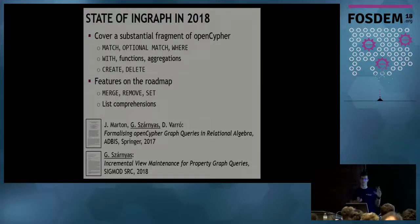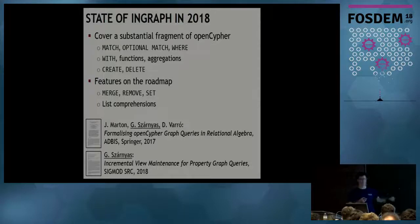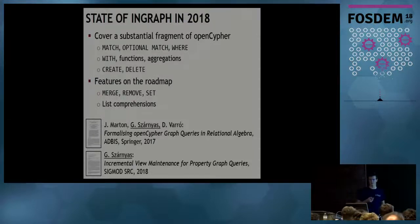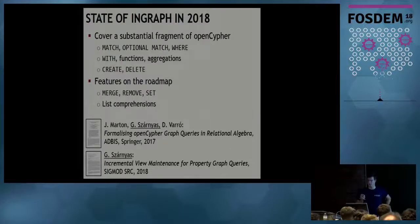Some features are still on the roadmap — like merge, remove, and list comprehensions — but InGraph is getting closer to the point where it can evaluate the most important JavaScript static analysis queries. We have two papers: one on the compilation of Cypher queries to algebra, and another on the incremental maintenance of those relational algebraic expressions.